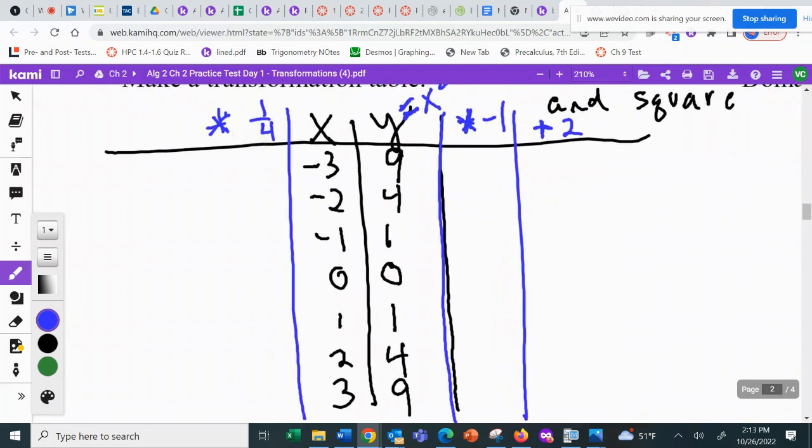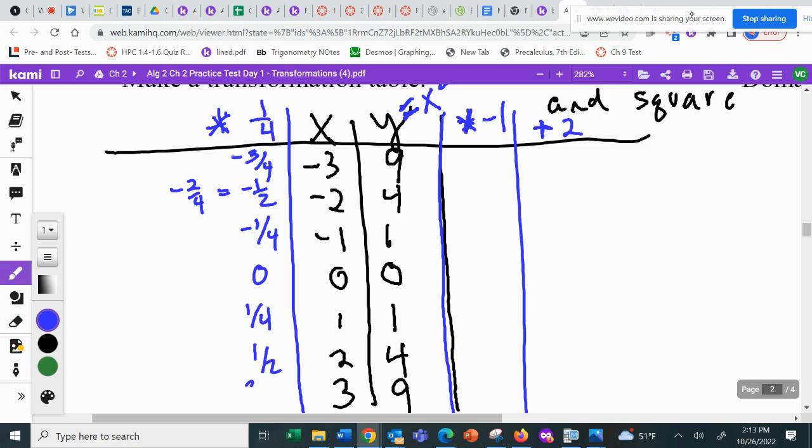So my words and my table match. The equation has a four, but the words and the table have the one-fourth. And now it's arithmetic. So I'm going to quickly multiply all of my x's by one-fourth. So I get negative three-fourths, negative two-fourths but that reduces to negative a half, negative one-fourth, zero, one-fourth, one-half, and three-fourths. Arithmetic.